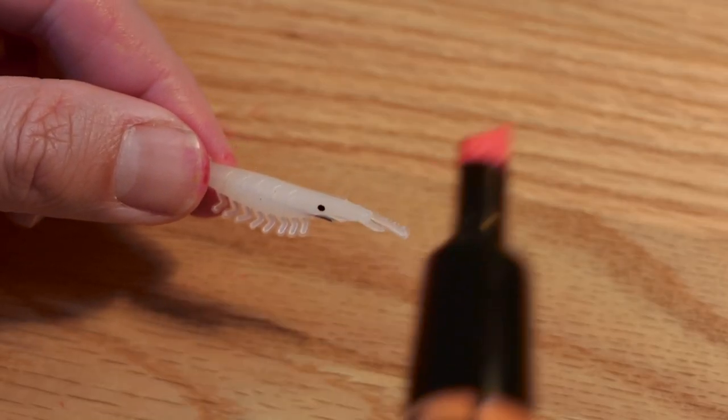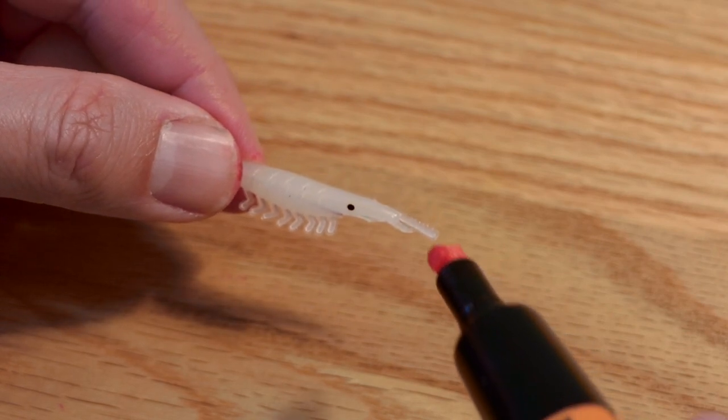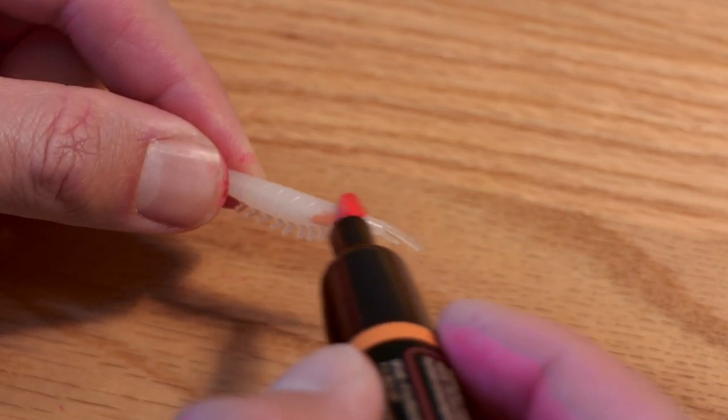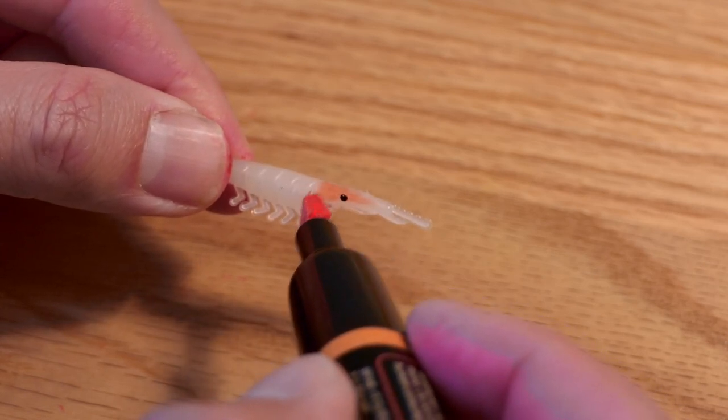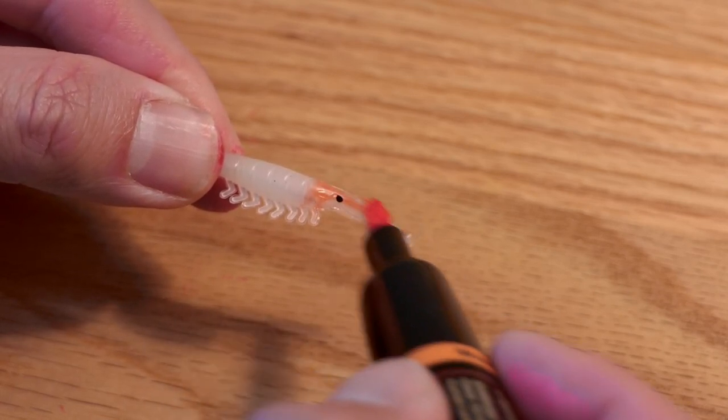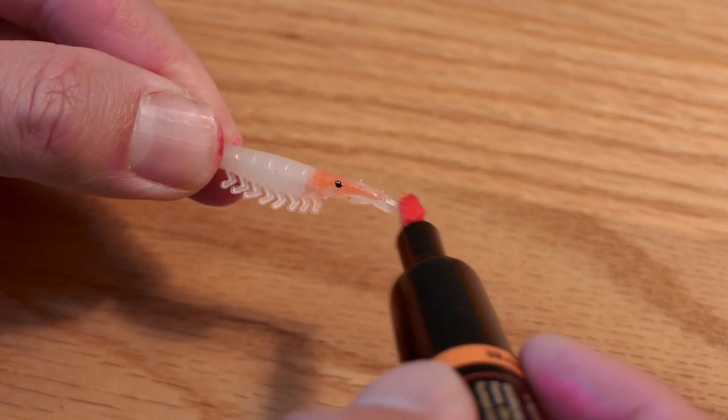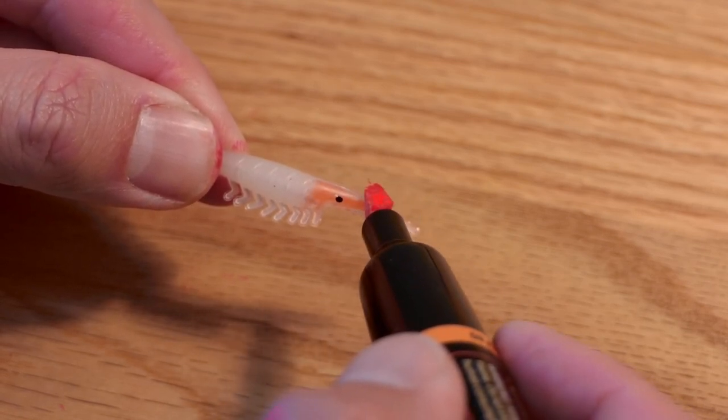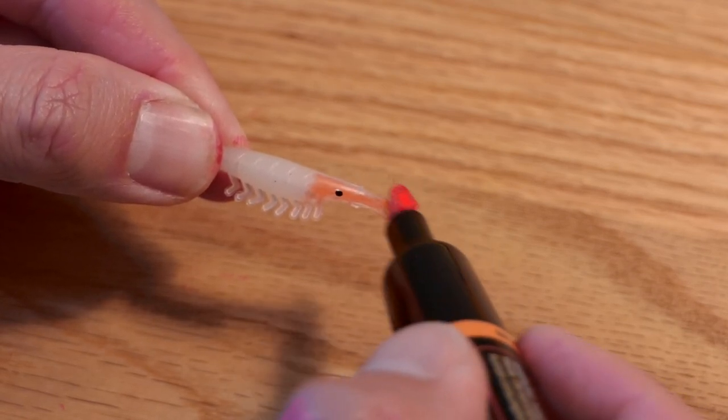Another pattern would be like a tri-color pattern, which works really well. Just creates a lot of interesting color reflections off of it. So here, instead of starting with a base, I'm going to start with a clean shrimp and do some orange on the head.